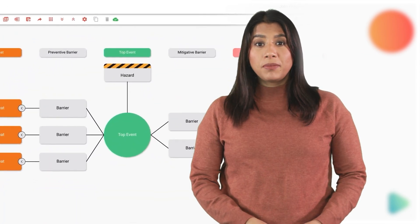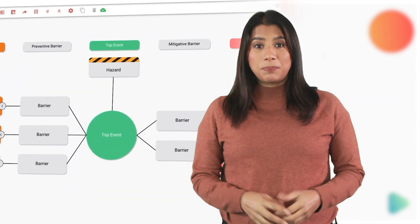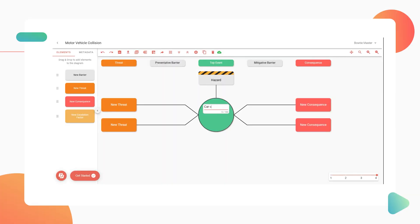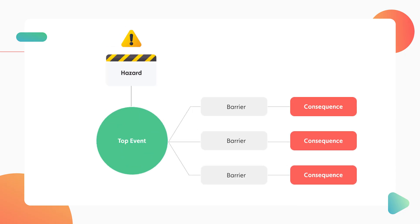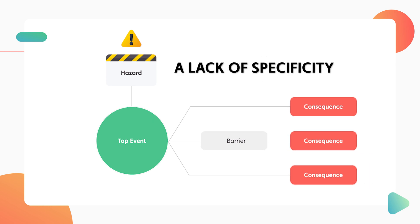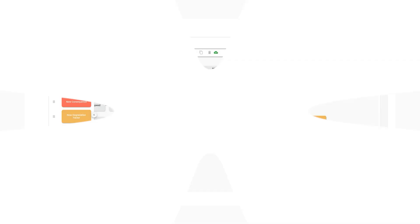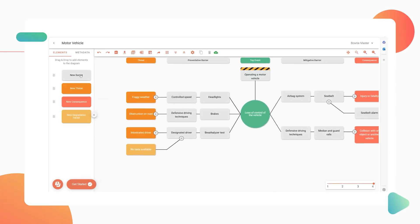Hello! Bowtie diagrams are easy to build, but one of the biggest challenges people face is correctly describing their elements. This means multiple barriers can get combined into one, a top event may actually be a consequence, or there could be a lack of specificity when it comes to the hazard. All of these can have a huge impact on the quality of your bowtie diagram.